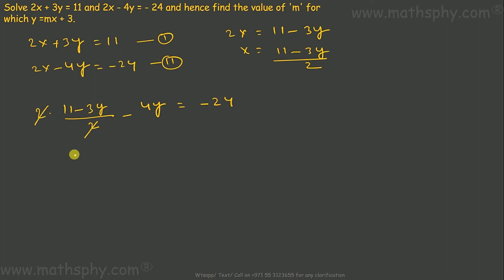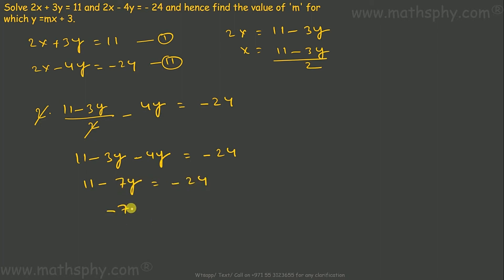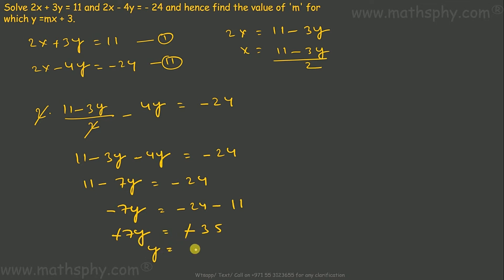The 2s cancel, so we get 11 minus 3y minus 4y equals negative 24. So 11 minus 7y equals negative 24. This gives negative 7y equals negative 24 minus 11, so negative 7y equals negative 35. Therefore y equals 35 over 7, which gives y equals 5.